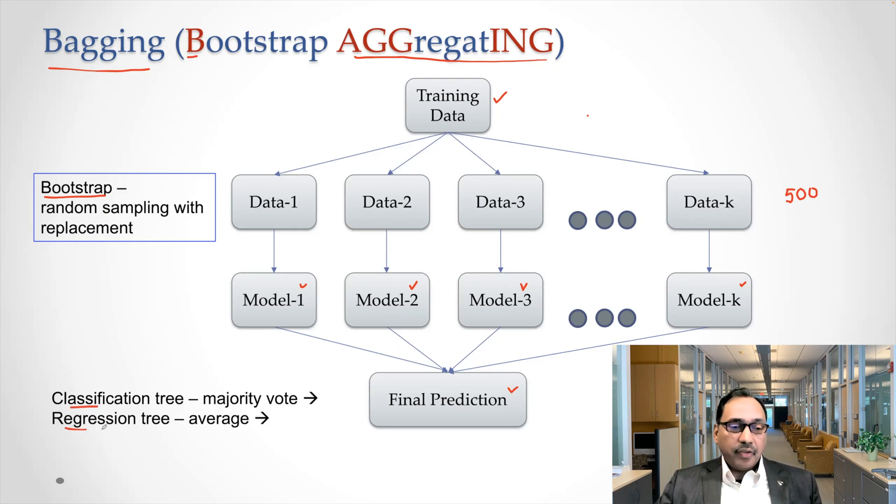But if you are doing a regression tree, you have like 500 values, MEDV values for the Boston housing data, you average those 500 values and treat that as a final prediction.